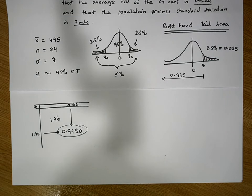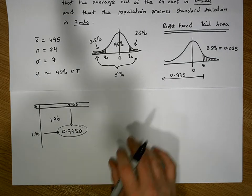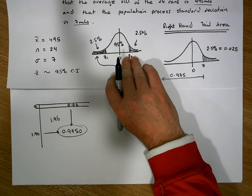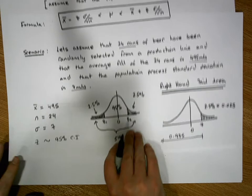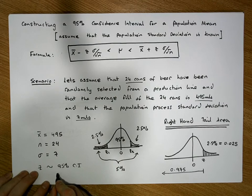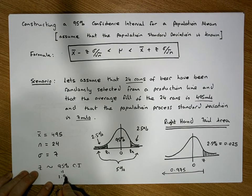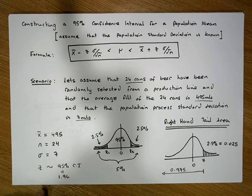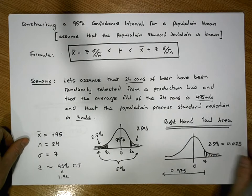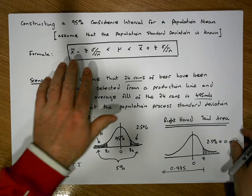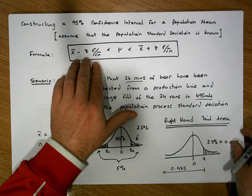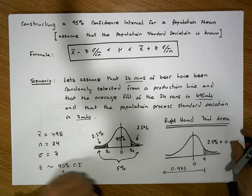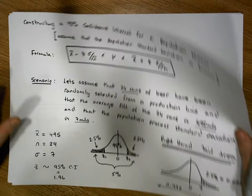Now that we have this particular z score, we know that the z score we require is equal to 1.96. So now we have all of our parameters, and we can do the calculation — filling all our parameters and statistics into the formula, which will allow us to calculate a lower bound and an upper bound for a 95% confidence interval.